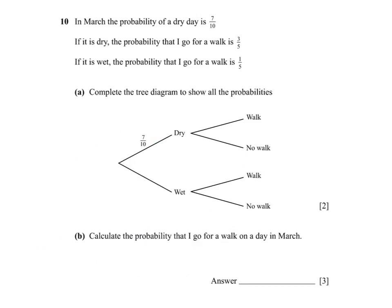Firstly we need to complete the tree diagram. And on the first set of branches, if the probability is 7 tenths and probabilities add to 1, then the probability of it being wet must be 3 tenths.